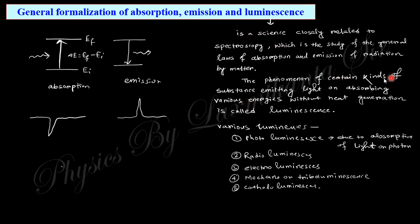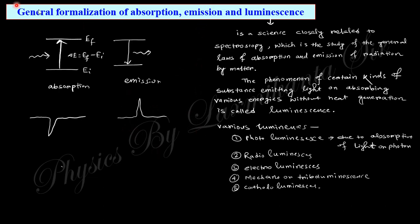Luminescence is when a substance absorbs energy and re-emits light without generating heat — the energy is radiated out. There are various types: photoluminescence, when luminescence is caused by photons; and radioluminescence, when radio waves are the cause. Luminescence releases energy without heating, and it can persist for a long time.